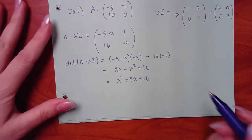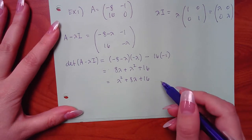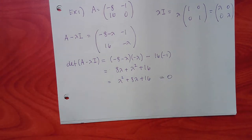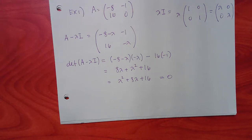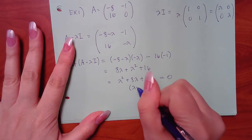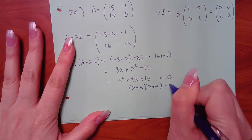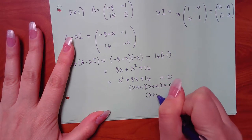To find the lambdas, set that equation equal to zero. We can factor it: lambda squared plus 8 lambda plus 16 factors as (lambda plus 4) squared.